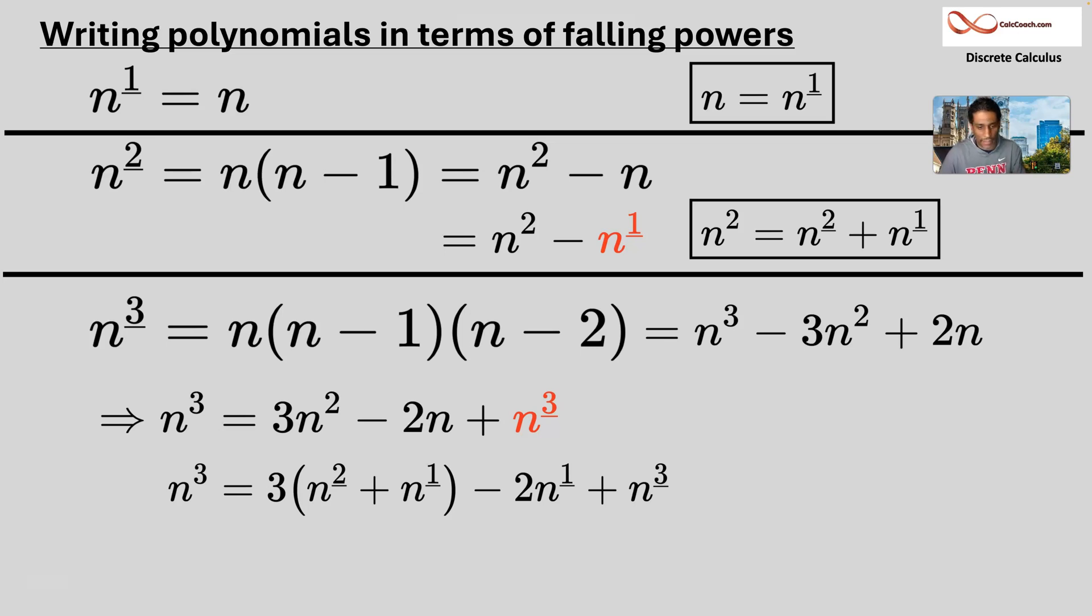And now we're placing everybody. Distributing. And grouping. We end up with n cubed being equal to n falling three plus three n falling two plus n falling one. These are facts that you can like write on a note sheet or something.